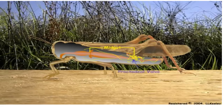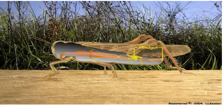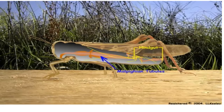Unabsorbed food particles pass through the proctodeal valve into the hindgut. At the junction of the midgut and hindgut are a group of long, thread-like tubules that flex about in the hemolymph. These tubules are called Malpighian tubules, and they are the insect excretory system.